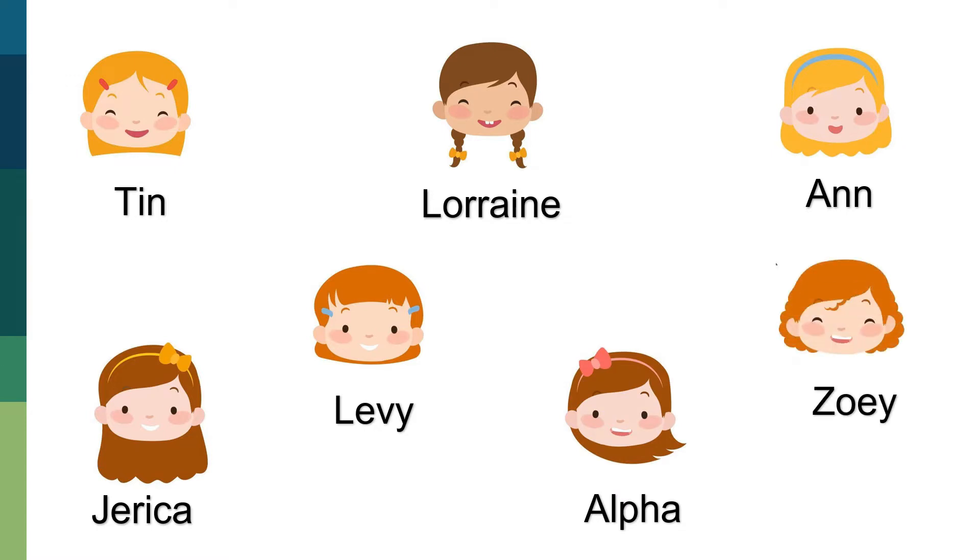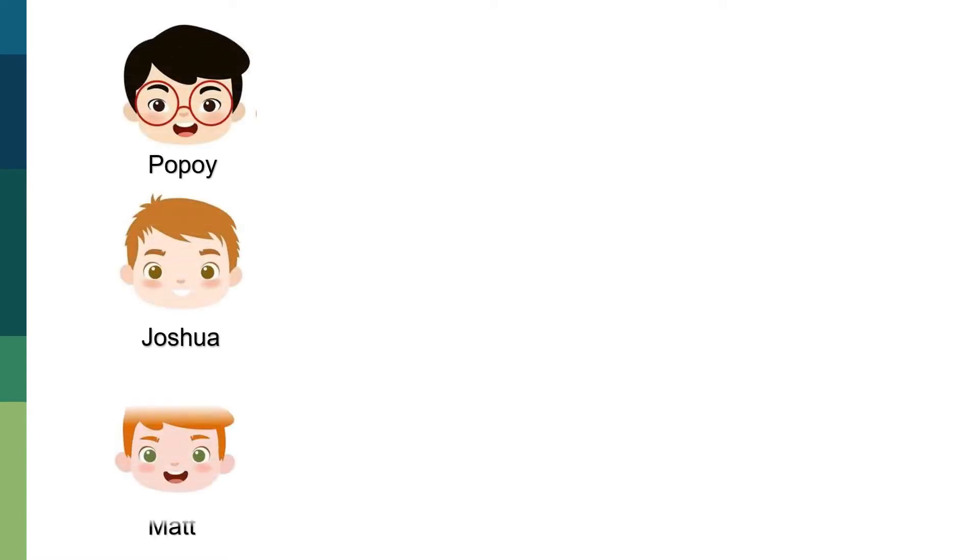Let us illustrate the relationships found in the story by having a mapping diagram. Popoy, Joshua, and Matt have something in common. They always believe in the importance of loyalty and trust in a relationship.